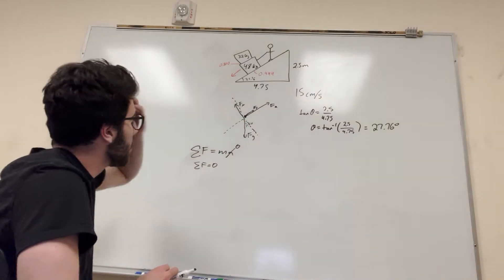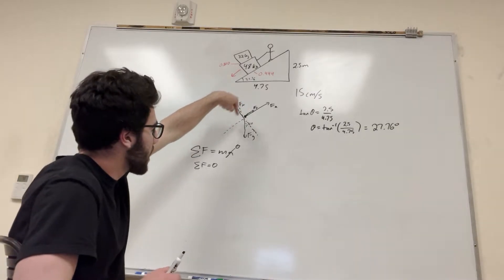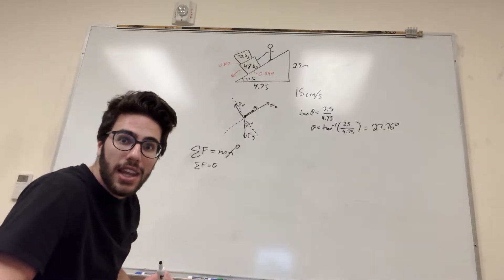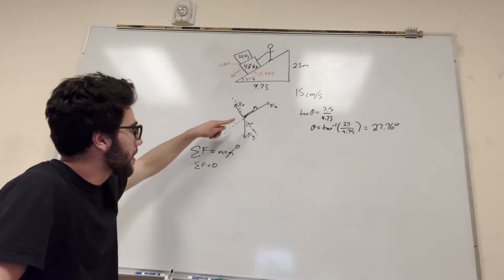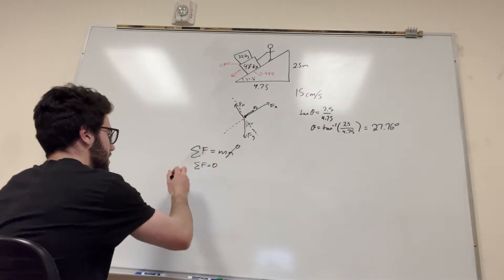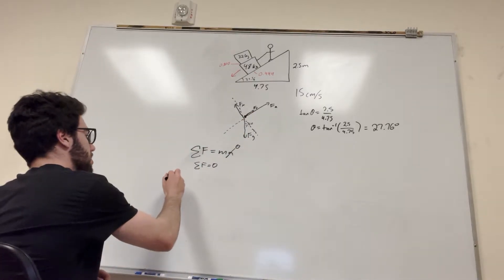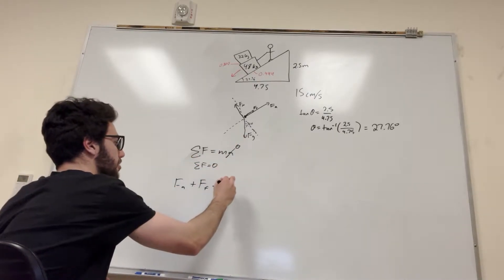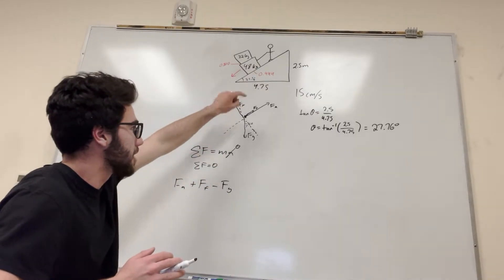We know the angle. What do we need? Well, we're finding the force in the direction along the ramp. Normal force is perpendicular so it has no effect in that direction, though we still need it for another step. What we do need are force friction and the component of force gravity along the ramp — force applied plus force friction minus force of gravity in the x-direction equals zero.